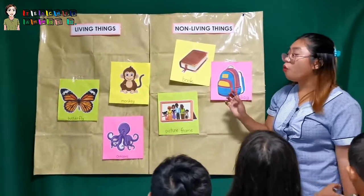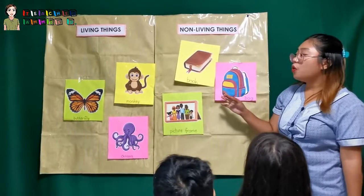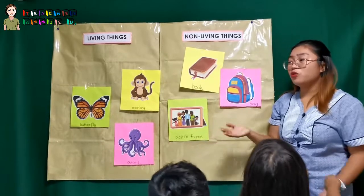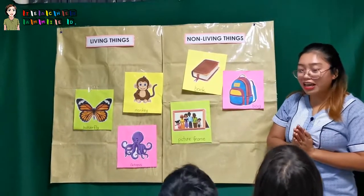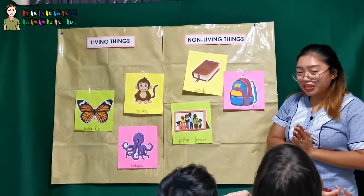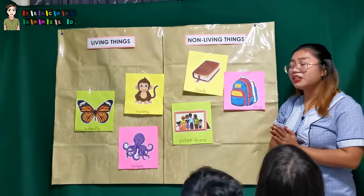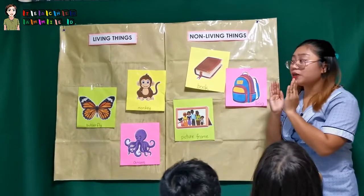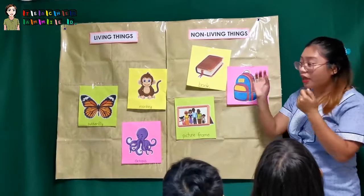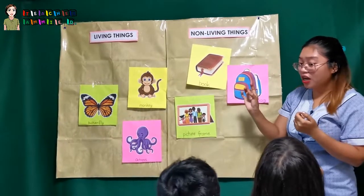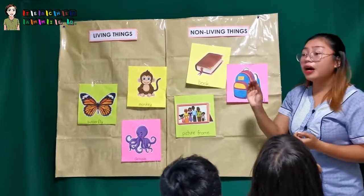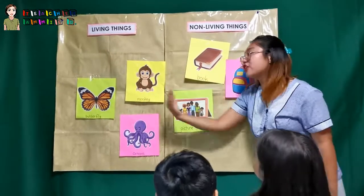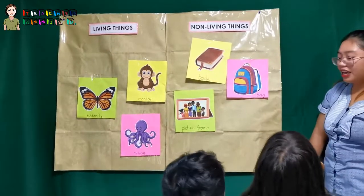Okay, so the food of the butterfly is leaves and flowers. Does a butterfly grow and change? Yes. So a butterfly starts as an egg, then caterpillar, then pupa, then butterfly. It grows and changes.